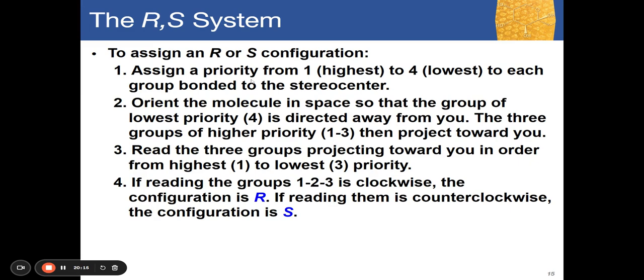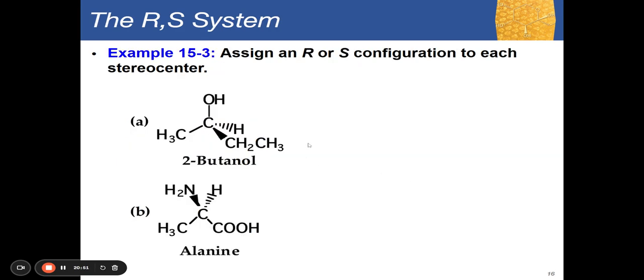To assign an RS configuration: first assign priorities (highest = 1, lowest = 4) to each group on the stereocenter. Then orient the molecule so the lowest priority group points away from you, with the three higher-priority groups projecting toward you. Read the three groups from highest to lowest priority. If the rotation from group 1 → 2 → 3 is clockwise, the configuration is R. If it is counterclockwise, the configuration is S.